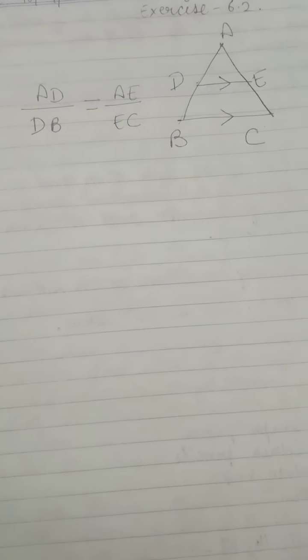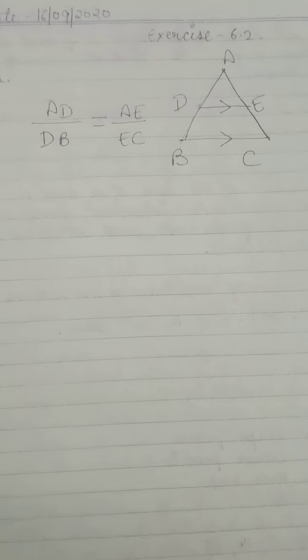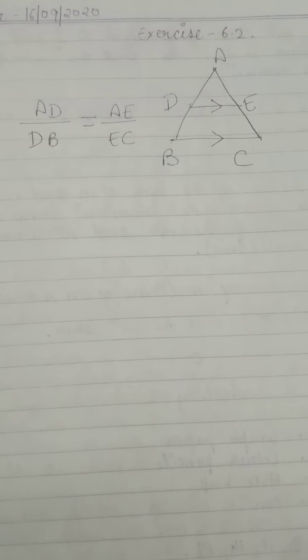What was proved is that AD upon DB is equal to AE upon EC. So, on the basis of this theorem, I am going to start exercise 6.2. Today we start exercise 6.2.